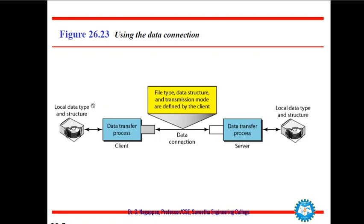For the data connection, the client specifies the file type, the data structure in which the data flows, and the transmission mode in which the data is being sent. The data is received at the data transfer process on the server side and stored to the hard disk or storage media on the server side. The reverse — vice versa — is also true.